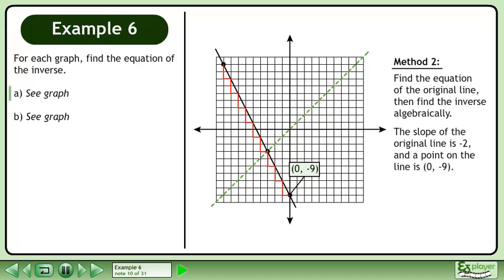The slope of the original line is negative 2, and a point on the line is negative 9, 0. Plugging our values into the slope point form of a line gives y minus 9 equals negative 2 times the quantity x minus negative 9. Simplify to get 2x plus y equals negative 9. Isolate y. The equation of the original line is y equals negative 2x minus 9.